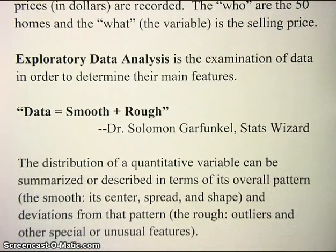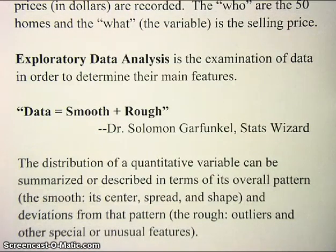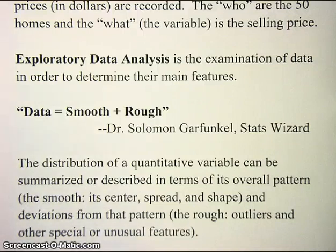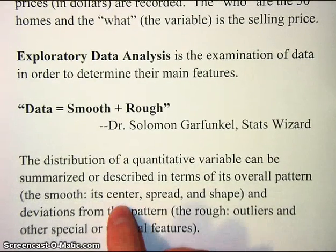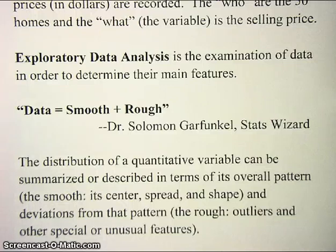If you're looking at a quantitative variable, you can summarize its distribution by looking at its overall pattern — that's the smooth. We describe the smooth in terms of the center of the distribution: where do these values tend to be located? Then its spread: how spread out around that central value are the data values? And then what shape do they take on if we put them into a graph? We'll look at all those things in subsequent videos. Deviations from the general pattern — that's the rough — including outliers, observations that stand apart from everything else, and other special or unusual features. In the next few videos we'll look at how to describe the center, spread, shape, and outliers of a quantitative variable's distribution.